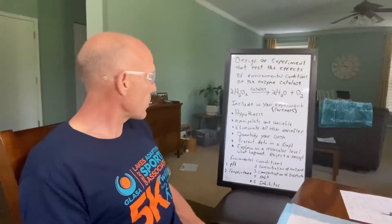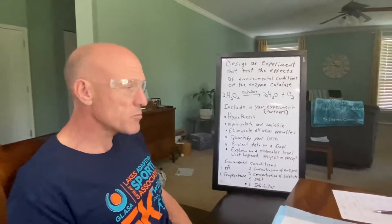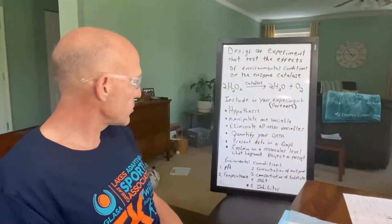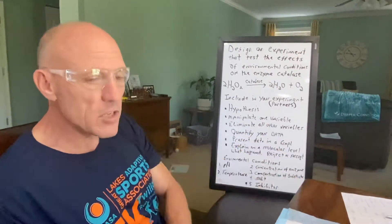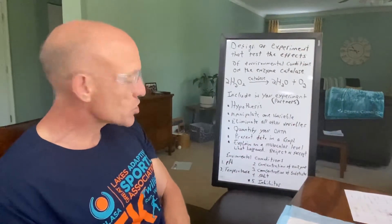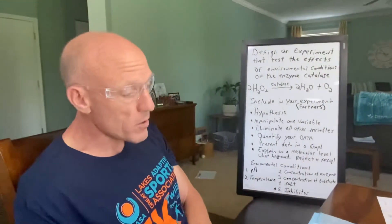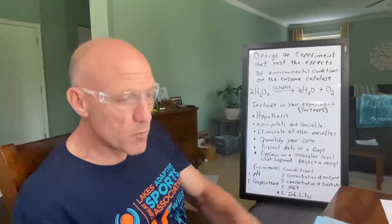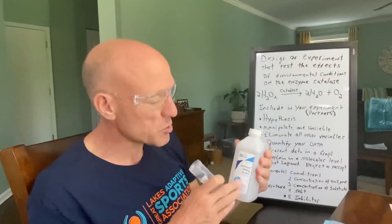Hopefully we're going to be in class and present our data on the board, or we'll present it on Zoom. You and your partner are going to explain on a molecular level what happened — it's going to involve a little bit of research. Your environmental conditions to pick from are: pH, temperature, concentration of enzyme — which will be in the yeast — or concentration of substrate, which is your hydrogen peroxide. Salt is also an option — I haven't tried it. And then the other hard one is the inhibitor. Rubbing alcohol is an inhibitor, and if you pick this one, we hope to figure out that it's a competitive inhibitor.